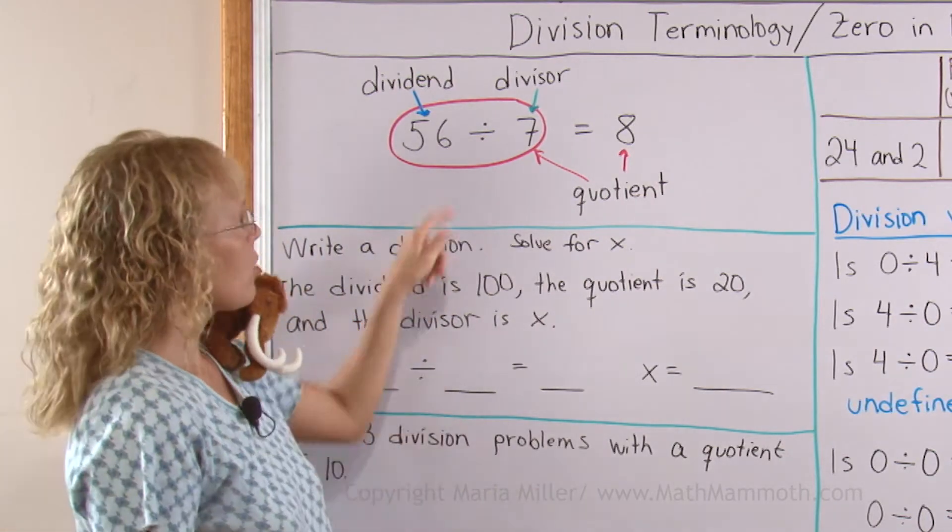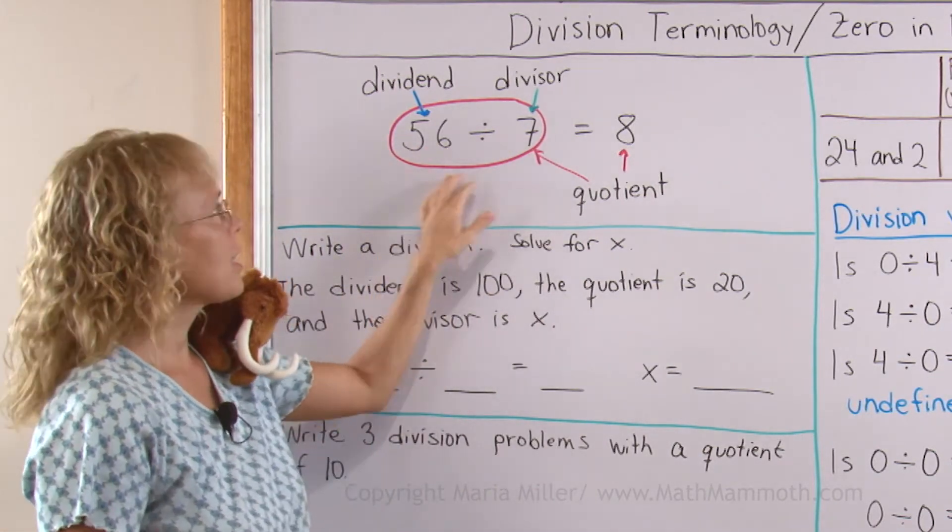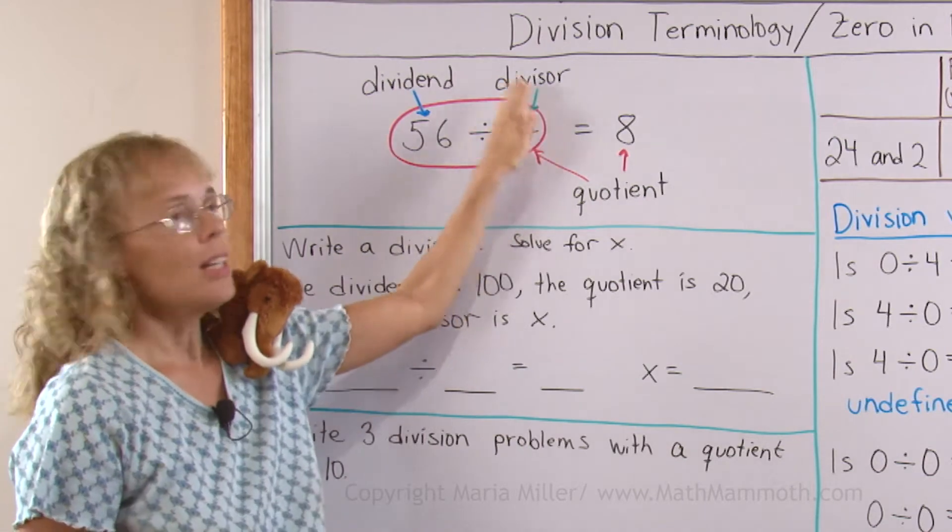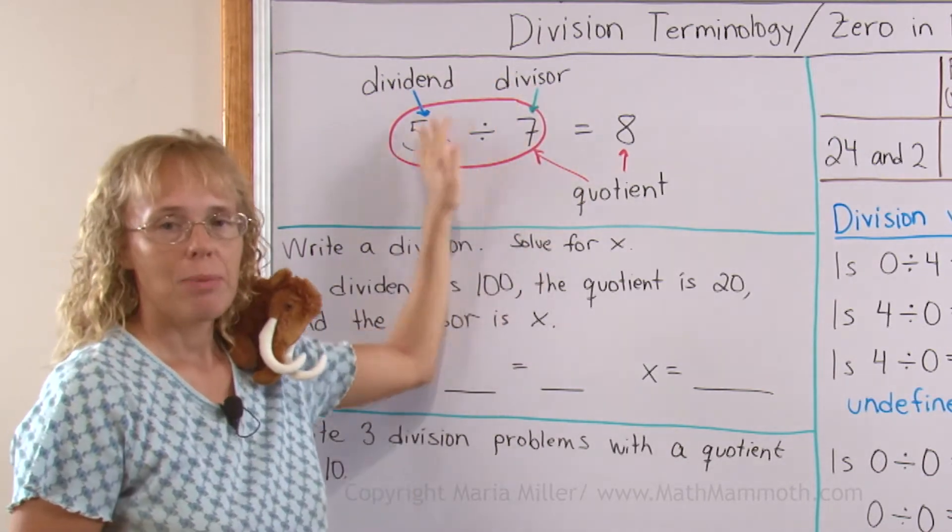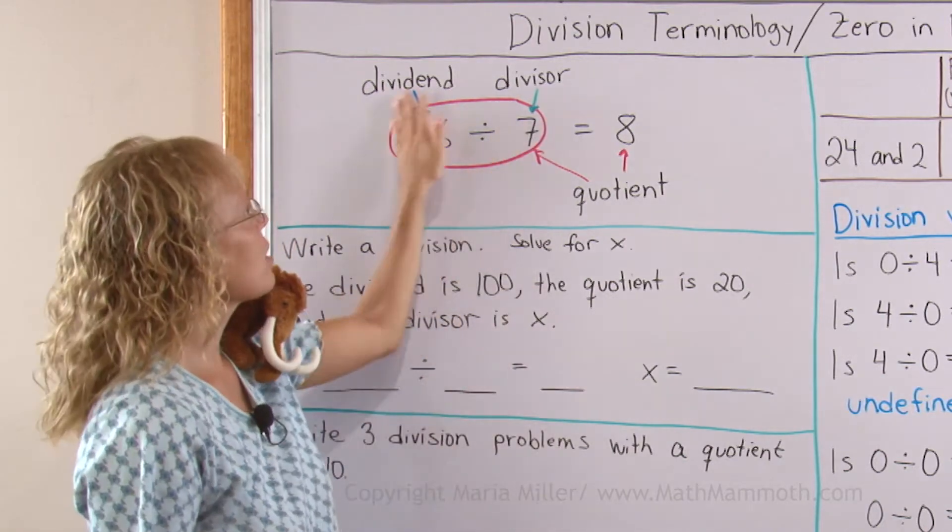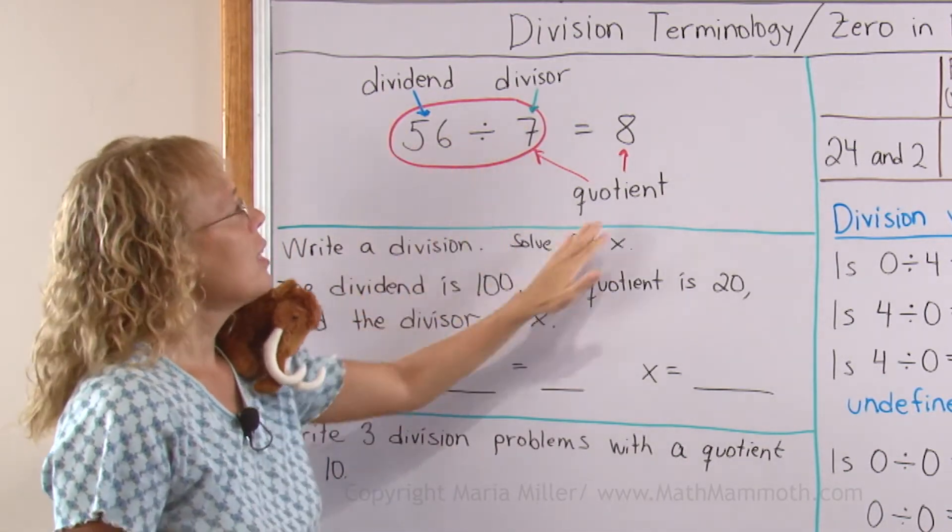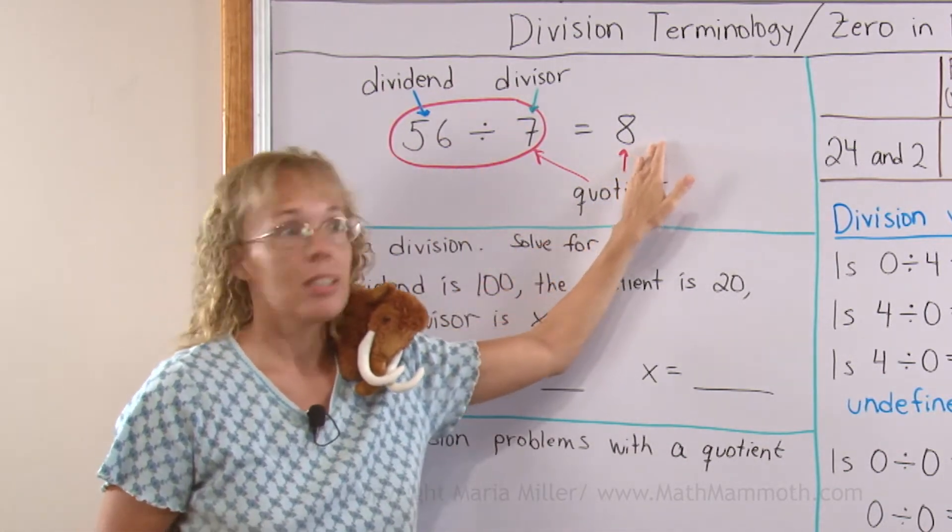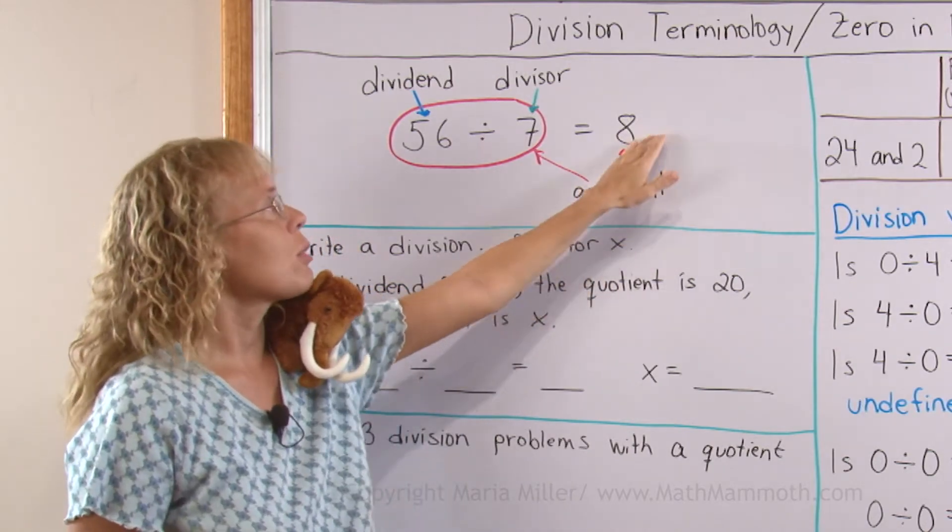However, we can also call the whole problem, the 56 divided by 7, that part here can also be called the quotient. It's basically the quotient that is not yet solved. It is the quotient written out as a problem to solve and then you can also call the answer when it has been solved as a quotient.